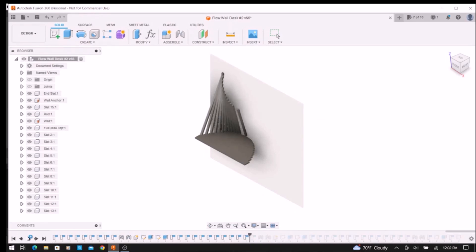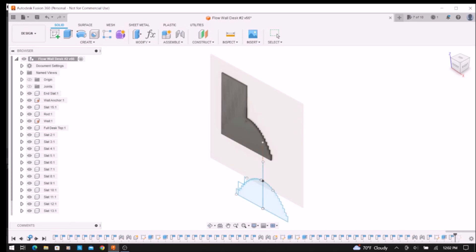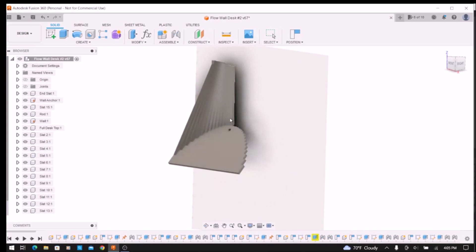One of the neat capabilities of Fusion 360 is its ability to model motion in design using joints. Each of the slats has two joints in the model.